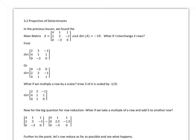Hi, this is 3.2 Properties of Determinants. In the previous lesson, we found that if we take the matrix A and find the determinant, we're going to end up with negative 18.